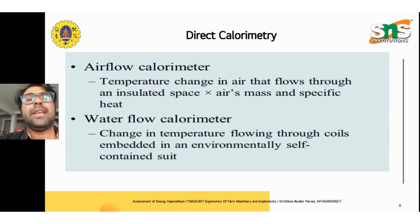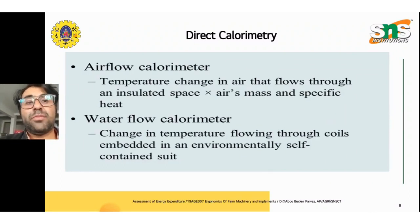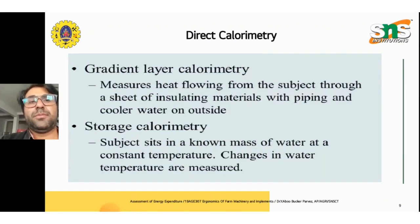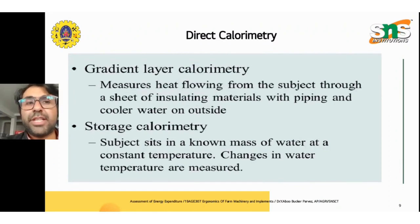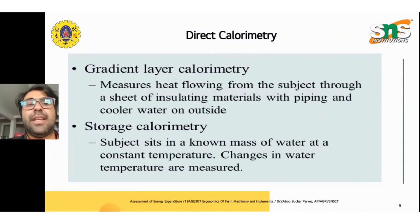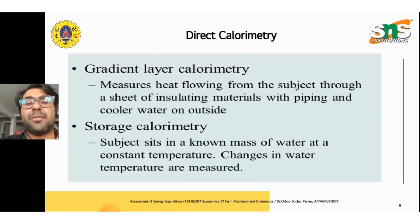In direct calorimetry, the airflow calorimeter measures temperature change in air flowing through an insulated space using the air's mass and specific heat. The water flow calorimeter measures temperature change in water flowing through coils in an environmentally self-contained unit. The gradient layer calorimeter measures heat flowing from the subject to a sheet of insulating material with piping and cooler water on the outside. Storage calorimetry has the subject sit in a known mass of water at constant temperature, and changes in water temperature are measured.